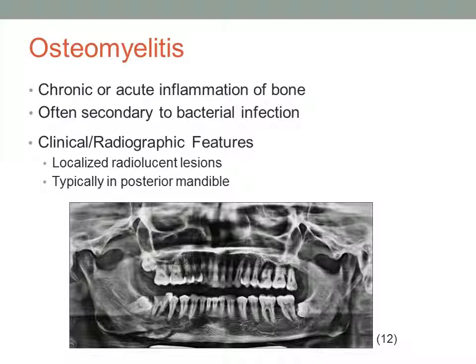Osteomyelitis is chronic or acute inflammation of the bone and or bone marrow, most often secondary to a bacterial infection. It presents as radiolucent lesions, which are also seen in sickle cell anemia. However, in osteomyelitis they are most often localized in the posterior mandible, while in sickle cell anemia it is generalized throughout the jaws and skull.